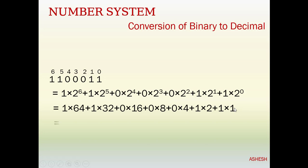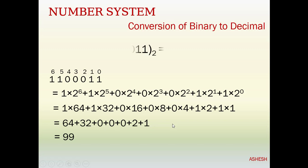So now: 1 into 64 equals 64, 1 into 32 equals 32, 0 into 16 equals 0, 0 into 8 equals 0, 0 into 4 equals 0, 1 into 2 equals 2, and 1 into 1 equals 1. Our answer is 64 plus 32 plus 2 plus 1 equals 99. That is our answer.